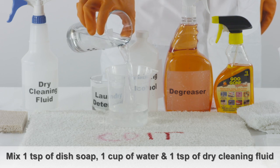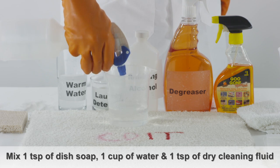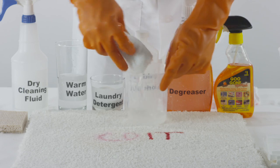Next, mix one teaspoon of liquid dish soap and one cup of warm water with one teaspoon of dry cleaning fluid. Gently blot the stain with a rag soaked in this solution.